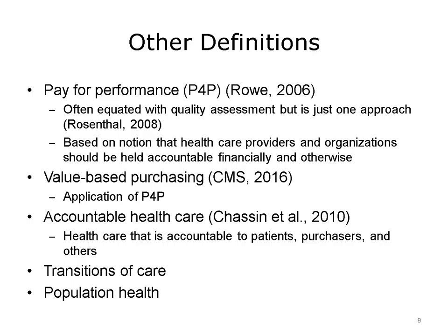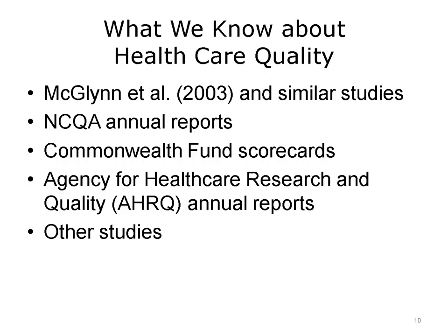Accountable health care also involves demonstrating positive patient outcomes across transitions of care. The term care transitions refers to the movement patients make between health care practitioners and various settings as their condition and care needs change during the course of a chronic or acute illness. Transitions of care are a set of actions designed to ensure coordination and continuity of the patient's care. Population health is also critical across populations of care. There are various resources for quality studies and benchmarks in health care — benchmarking is a management approach for implementing best practices at best cost, especially regarding quality activities.